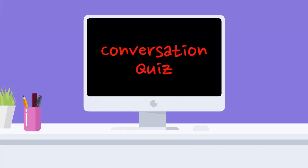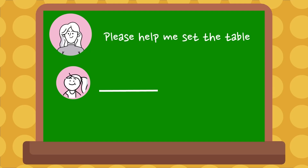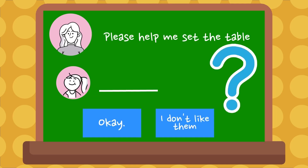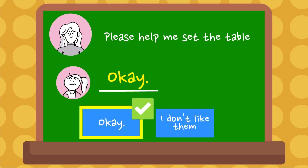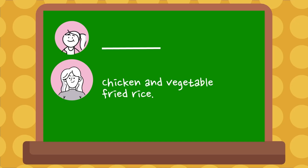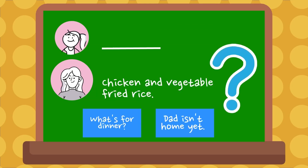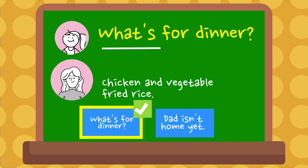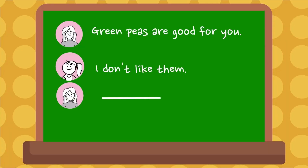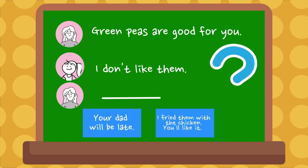Conversation quiz. What does Ann say? Please help me set the table. OK. I don't like them. What does Ann say? What's for dinner? Dad isn't home yet. What does Mom say? Green peas are good for you. I don't like them. Your dad will be late. I fried them with the chicken. You'll like it.